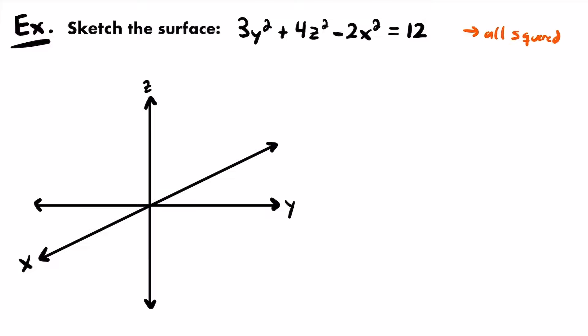Take a look at the sign of these variable terms. Both y and z are positive, but the x term is negative — we have -2x². So one of them is negative. We have 1 negative term. The equation is pretty close to standard form already: we have our 3 variable terms equal to a positive constant. The only thing needed to get into standard form is to divide by 12, making the equation equal to 1.